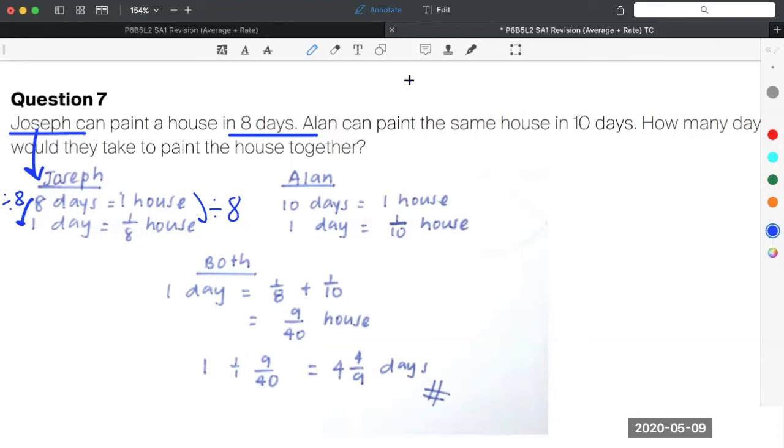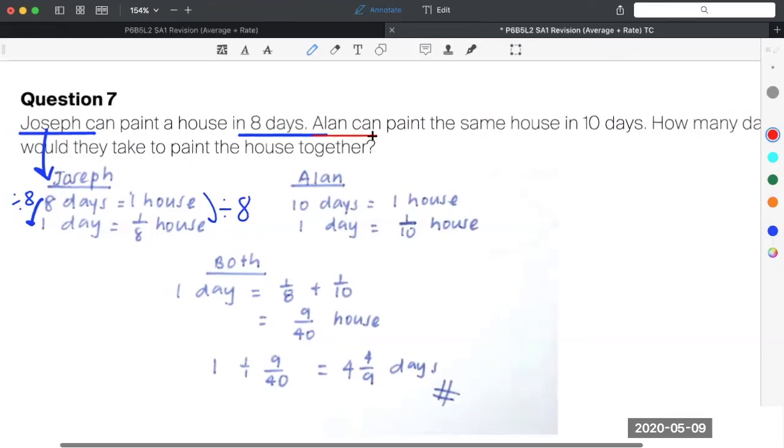Now, the next subject will be Alan. Alan can paint the same house in 10 days. Ten days, one house. In a day, what fraction of the house is painted by Alan? One out of 10. The heading here represents the subject.